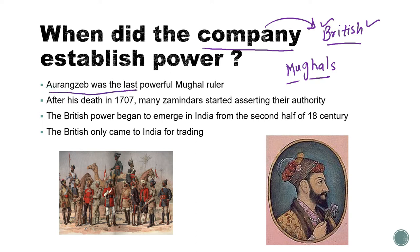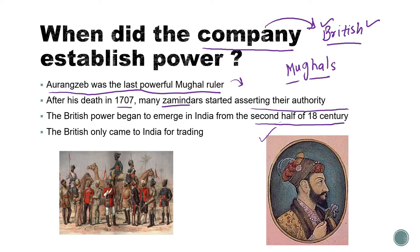Aurangzeb was the last powerful Mughal ruler. After his death in 1707, there were many local powers and they started asserting their authority across the region. The result was fragmentation, and the British thought this was the right moment to start ruling India. They began to emerge in India from the second half of the 18th century.